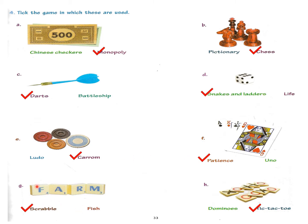Then here you can see these plastic squares which are used in scrabble, so you will tick mark scrabble. And this last one, cross and zero, is used in the game tic-tac-toe, so you will put a tick mark in tic-tac-toe.